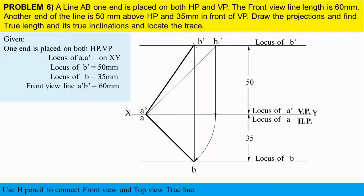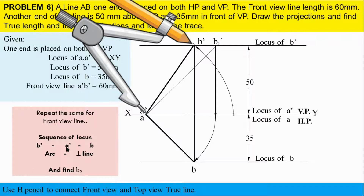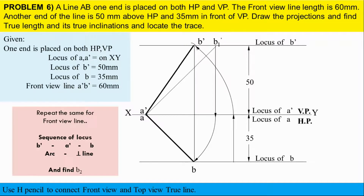In front view: the apparent line is A-dash B-dash. First B-dash to A-dash — R in front view. Then A-dash perpendicular line — locus of A-dash. Locus of B — perpendicular line — top view intersection point gives B2. Top view true line is A-B2. Draw with H pencil.